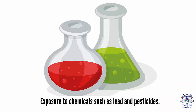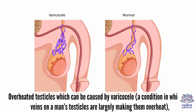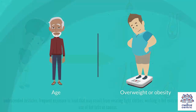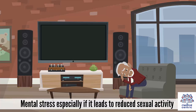Other causes include exposure to chemicals such as lead and pesticides; overheated testicles, which can be caused by a varicocele — a condition in which the veins on a man's testicles are enlarged, making them overheat; undescended testicles; frequent exposure to heat from wearing tight clothes, working in hot environments, or the use of hot tubs or saunas; age; overweight or obesity; and mental stress, especially if it leads to reduced sexual activity.